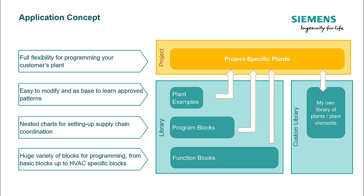What are plants? A plant in the programming editor consists of all required function blocks to control plant components for an HVAC plant or partial plant. A plant can have the following components: input blocks like sensors and switches, and function blocks with programming logic to calculate values for the output blocks based on the values of the input blocks.